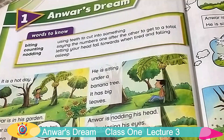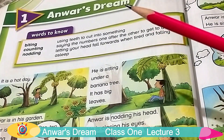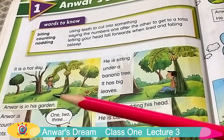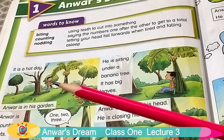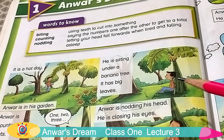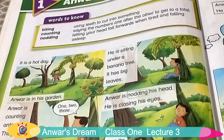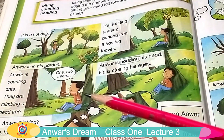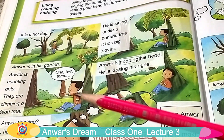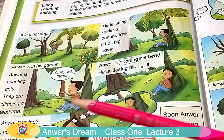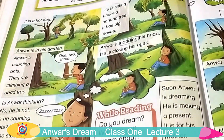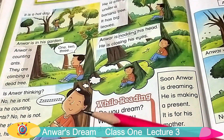Students, this is Unit 1 — Anwar's Dream. This is a very interesting story about a boy whose name is Anwar. He is in his garden. Here in this picture, he is sitting under a banana tree. And here Anwar is counting ants. They are climbing a dead tree. Anwar is nodding his head and feeling sleepy, and then Anwar is sleeping.